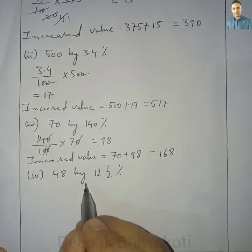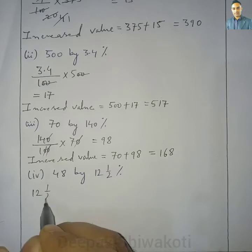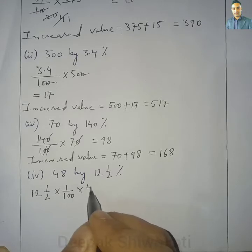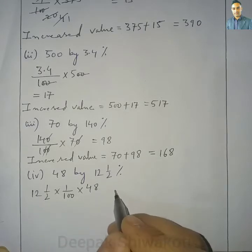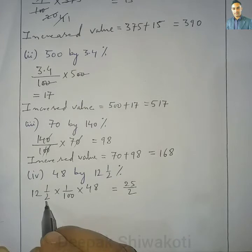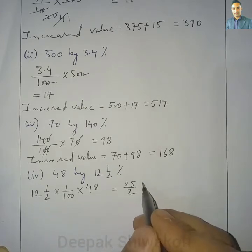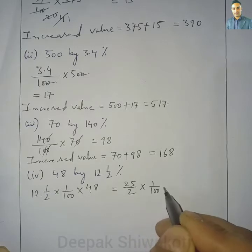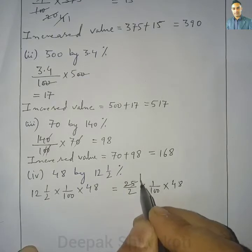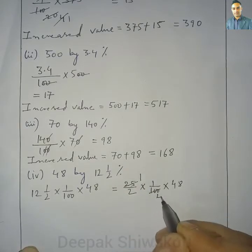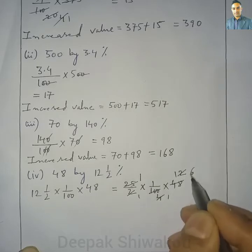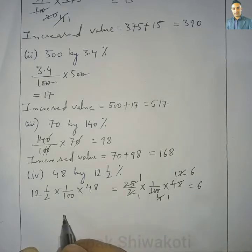Question 1.4: Increase 48 by 12½%. Here 12½% means 25/2 × 1/100 × 48. Simplifying: 25 × 48 divided by 200 gives us 6. The increased value is equal to 48 plus 6, which equals 54.